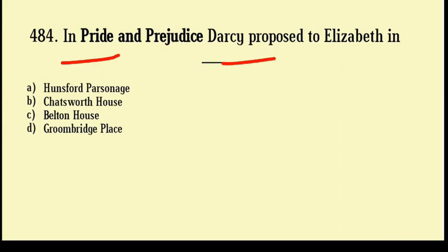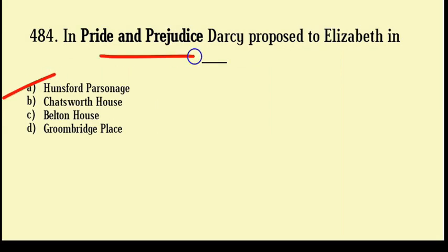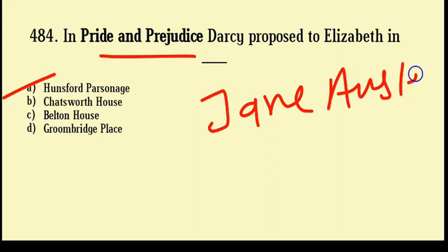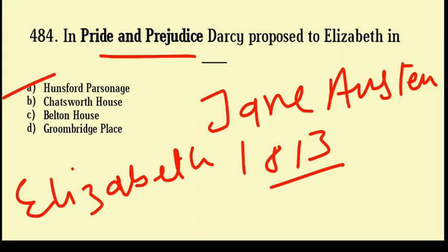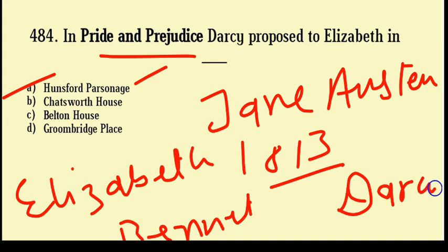In Pride and Prejudice, Darcy proposed to Elizabeth in: Hunsford Personage, Chadsworth House, Belton House, Groomsbridge Place. Correct answer: Option number A, Hunsford Personage. Pride and Prejudice is a romantic novel of manners written by Jane Austen in 1813. The novel follows the character development of Elizabeth Bennet. The first proposal occurred in the Hunsford Personage while Darcy was visiting his aunt at the Rosing Park, and Elizabeth rejected the proposal.